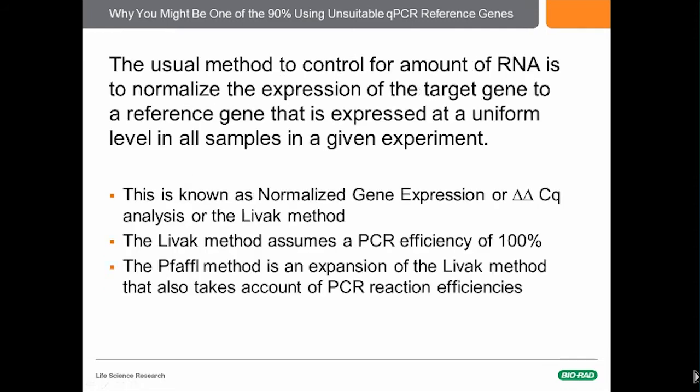The usual method is to normalize the expression of the target gene to a reference gene that's expressed at a uniform level in all samples in a given experiment. And that's the tricky thing — making sure that it is expressed at a uniform level.